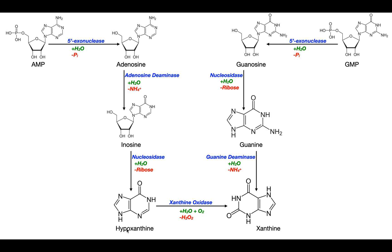Coming over to the adenine side, hypoxanthine is converted to xanthine by the enzyme xanthine oxidase, which uses water and molecular oxygen to add a carbonyl on the carbon between the two nitrogens. Xanthine has been flipped 180 degrees relative to hypoxanthine, just as it was with guanine in the other pathway.